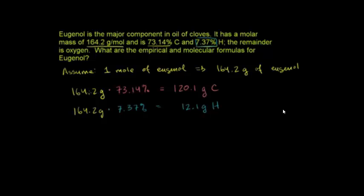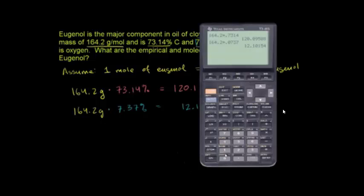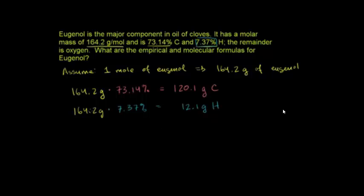We can take the mass of hydrogen and the mass of carbon and subtract them both from 164.2 grams. Whatever is left over will be oxygen. So 164.2 minus 120.1 grams of carbon and 12.1 grams of hydrogen leaves us with exactly 32 grams of oxygen.